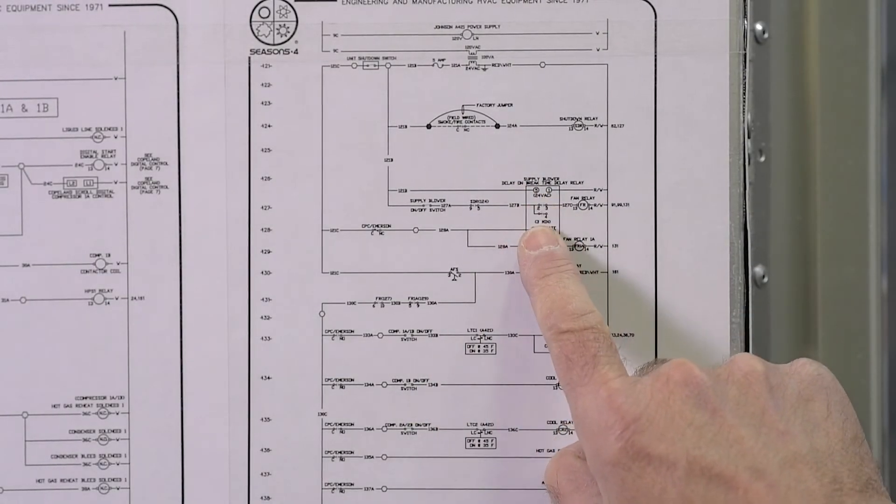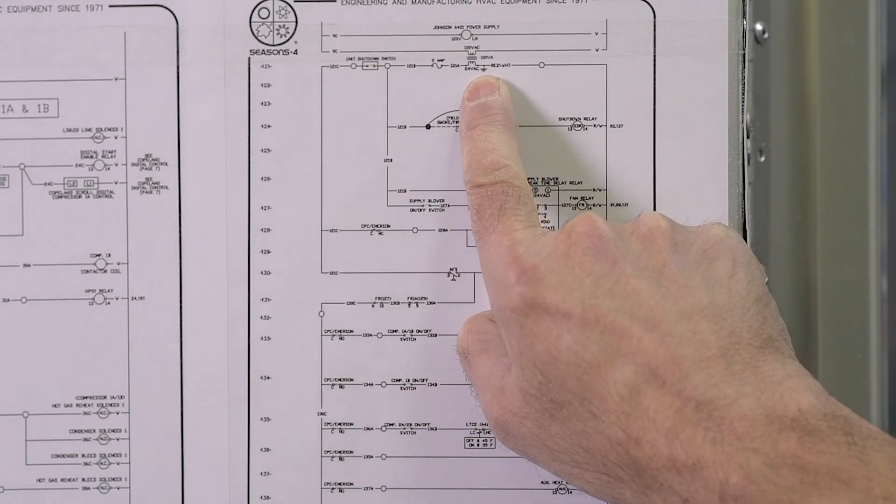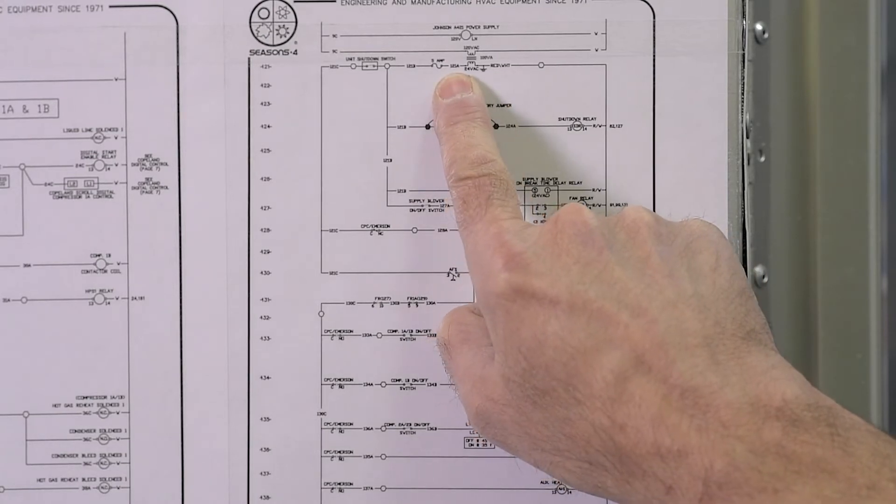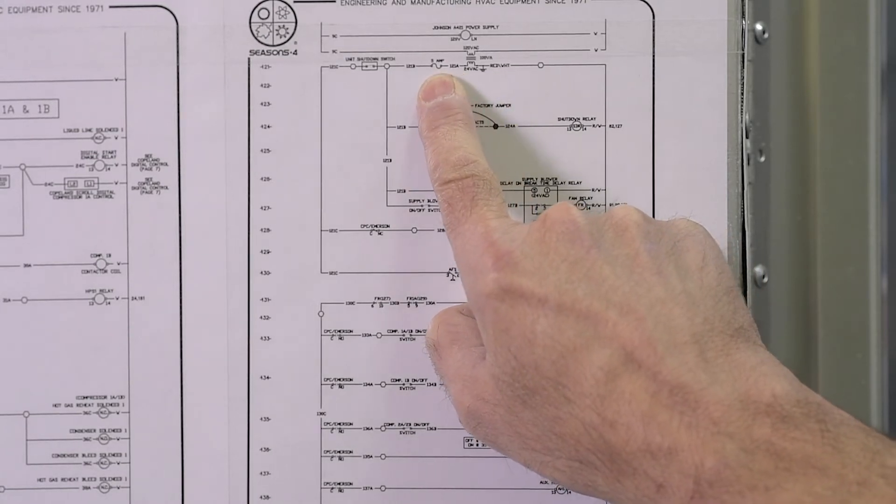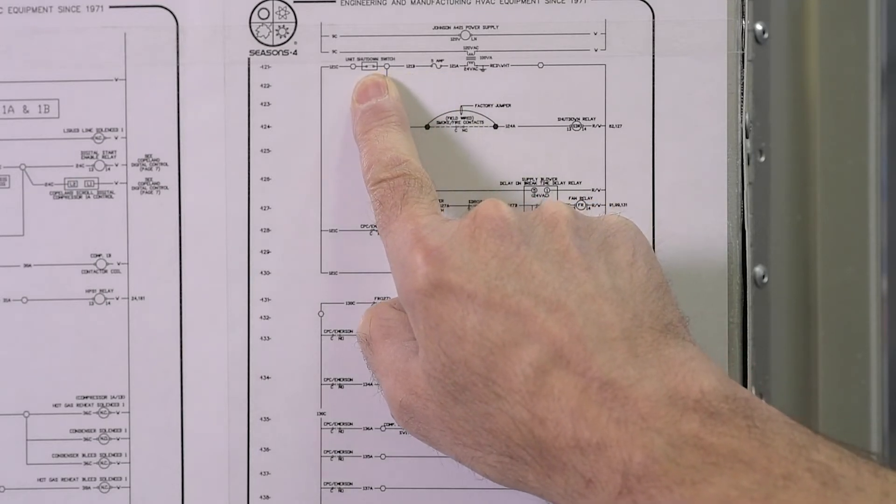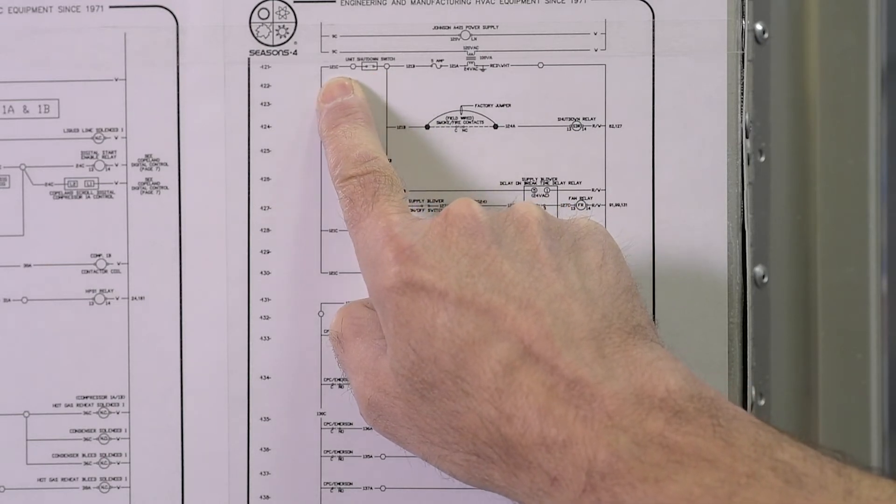This is the 24-volt page of the electrical diagram. We've got 120 volts coming into a transformer becoming 24 volts AC, a 121A that goes through a fuse and comes out at 121B, goes into the unit shutdown switch located on the outside of the control panel and comes out at 121C.